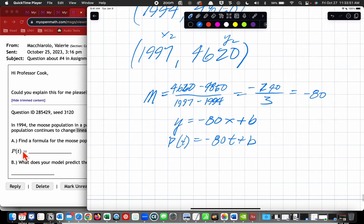And we can put in any of these two points, so 4620 is my population of moose, and then 1997, and for that, plus b.